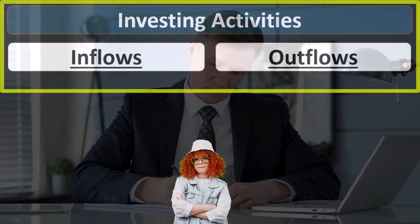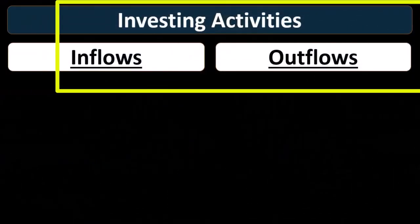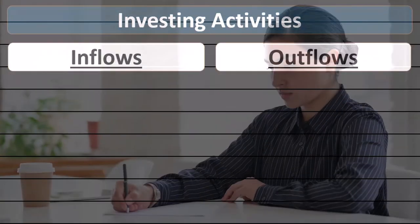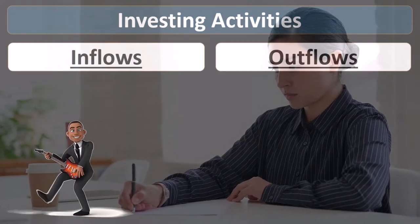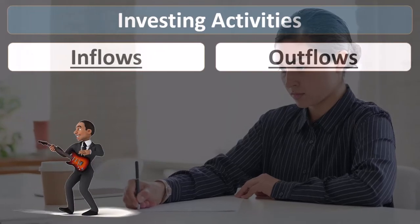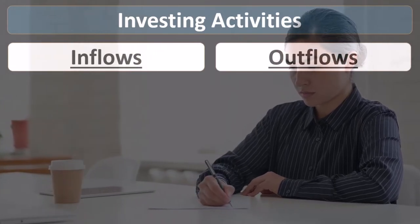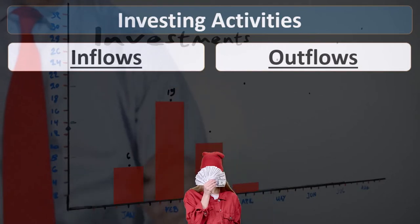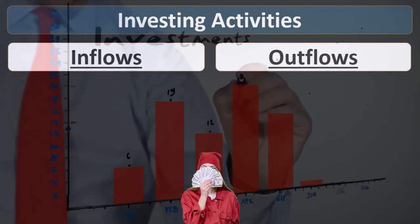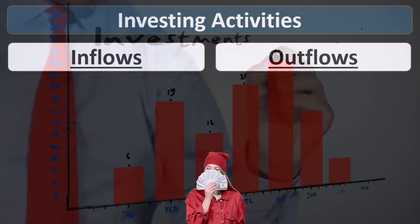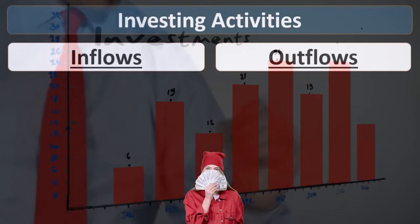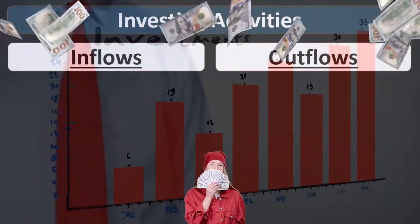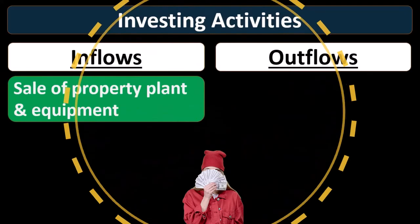Now we'll go to the investing activities — inflows and outflows. Note that most of the activity is probably going to be in operating activities, since those are normal operations. But we have other activities dealing with investing and financing. A useful way to think about it: if you look at the normal journal entry for a transaction, is there an income statement account involved? If yes, it's probably an operating activity. If not, it's probably investing or financing.